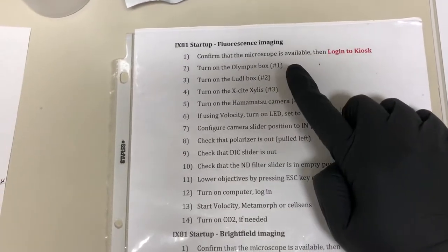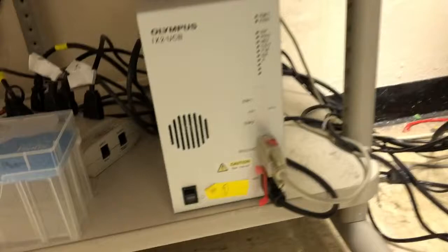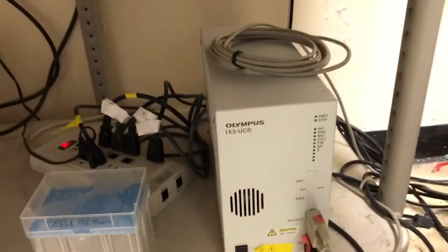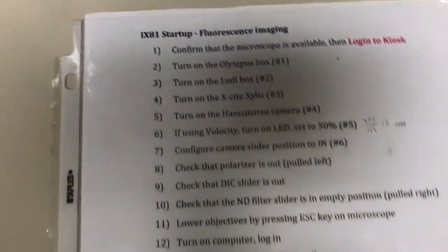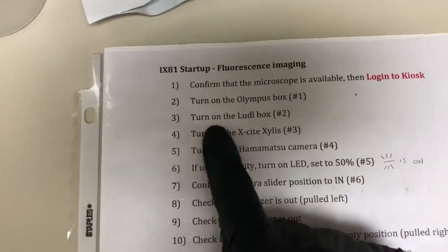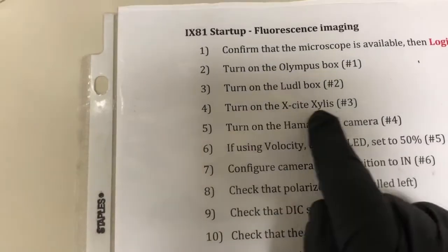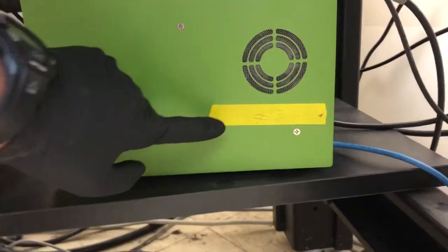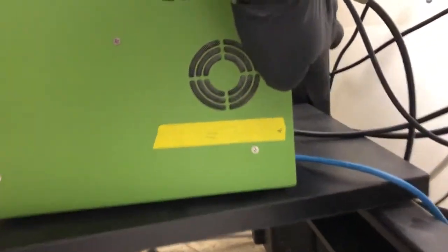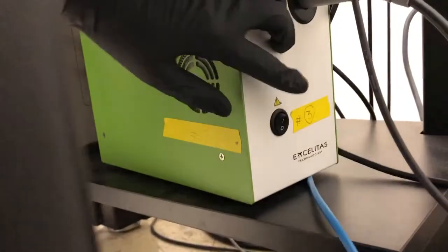The second step is to turn on the Olympus box, which is item number one. The Olympus box is down here. There we go. The lights should turn on and you'll hear a bunch of noises on the microscope. Second step is to turn on the Excite Silas. That's number three. So that's this element here. You can barely see it's a little bit faded. And there's an on-up button over here. Let me see if you can see it on the side. So there's an on-up button.